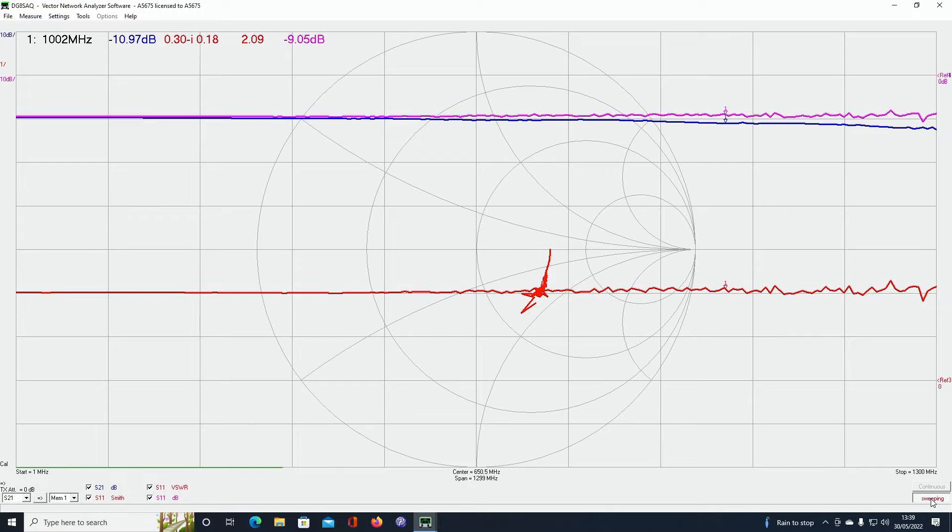So this is what we get from the vector network analyzer. At 1 gigahertz, this is a 5 gigahertz device by the way, we've got 11 dB of loss. We should only have about 6 dB. We've got a VSWR of 2.09 and we should be looking at 1.2 to 1.5.